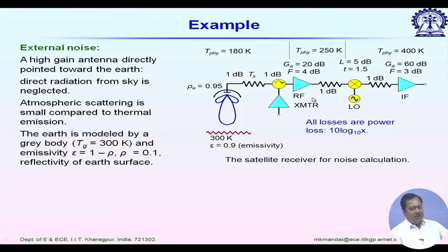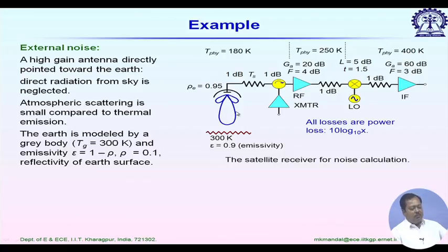When converting noise figures from dB to noise factor, since we deal with power (not voltage), we divide by 10. For example, the 4 dB noise figure converts to a noise factor of 10^0.4.